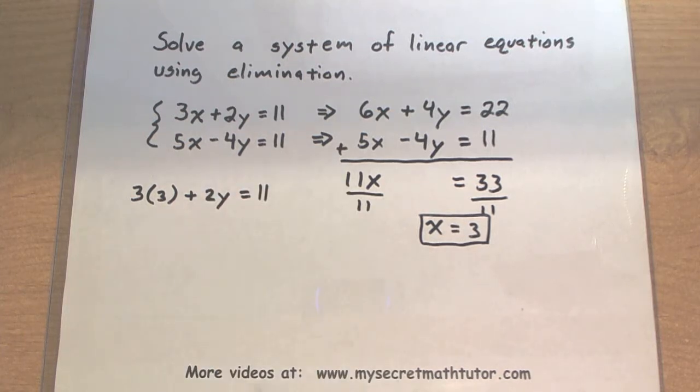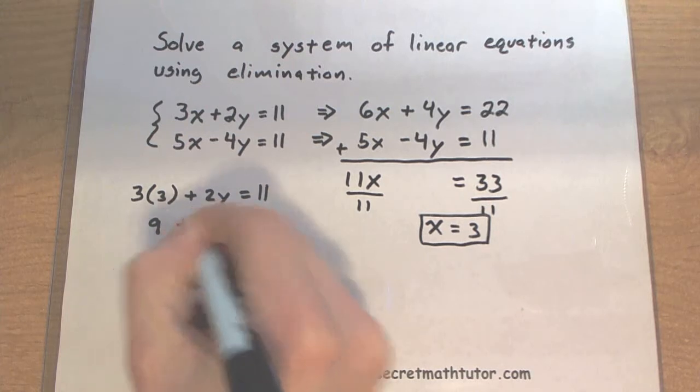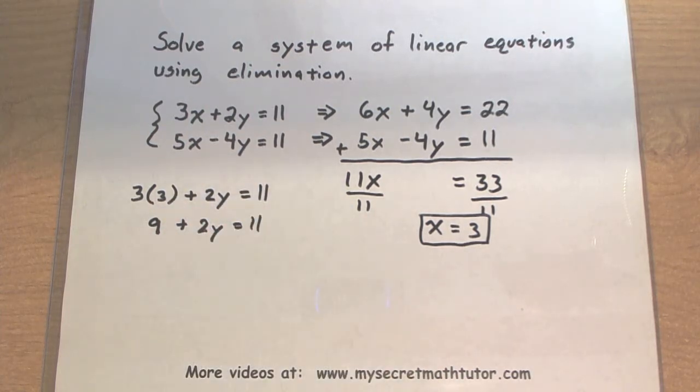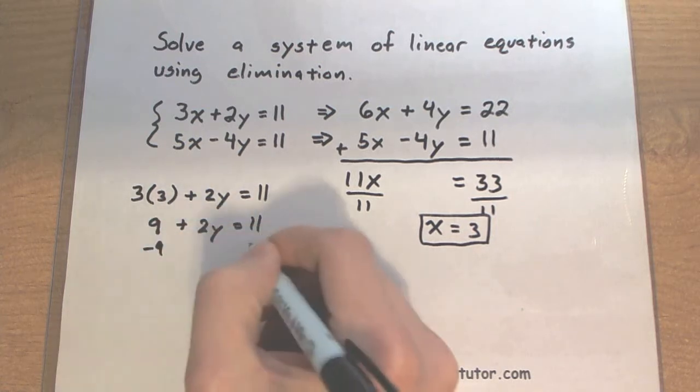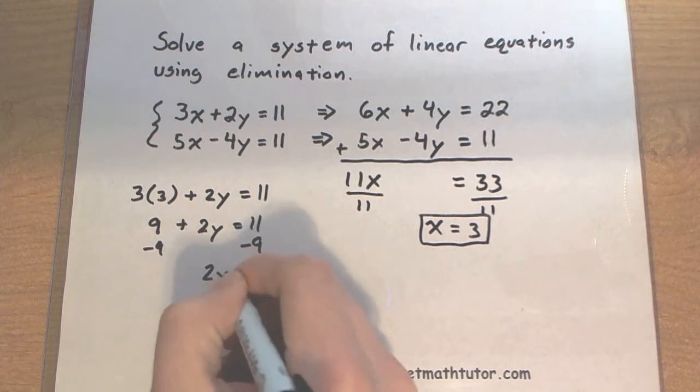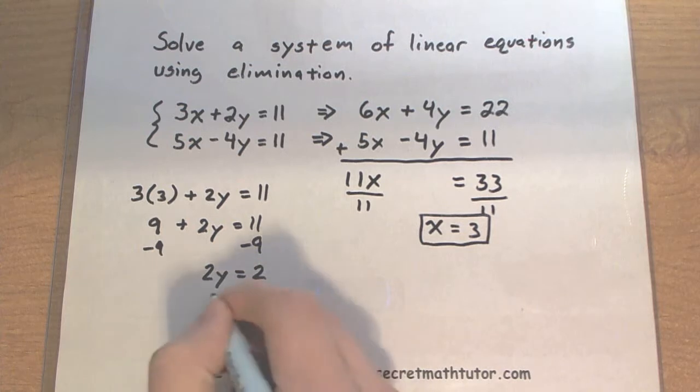Now what we're going to do is solve this one for y. So 3 times 3 gives us 9. We work to try and get the y all by itself, so let's subtract 9 from both sides. 2y equals 2, therefore y is equal to 1.